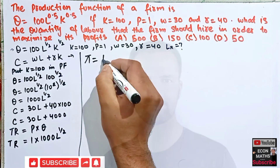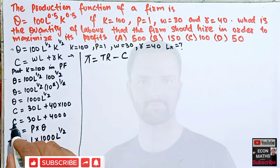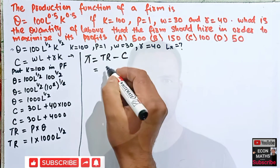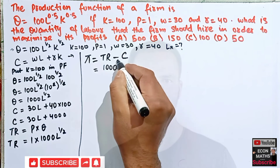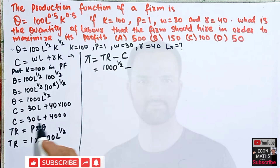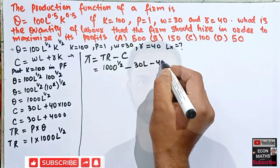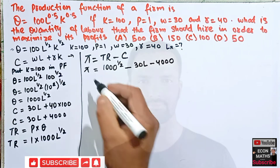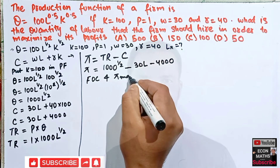Profit is simply total revenue minus total cost. So our profit function is π = 1000L^(1/2) − 30L − 4000. This is our profit function.